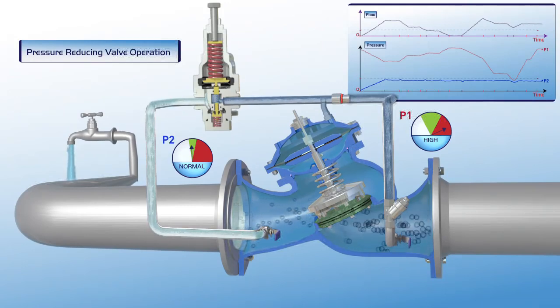As illustrated in this film, the Bermad pressure-reducing control valve reduces higher upstream pressure to lower constant downstream pressure, regardless of fluctuating demand or variations in upstream pressure.